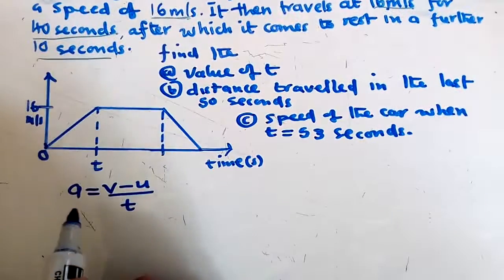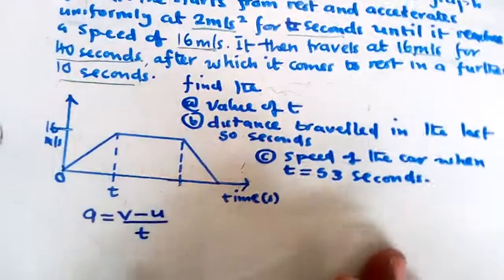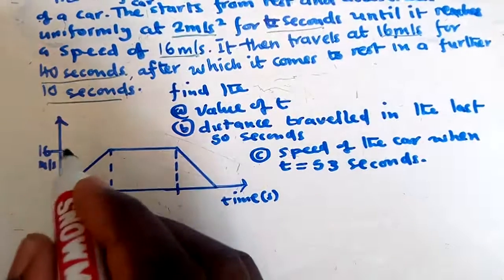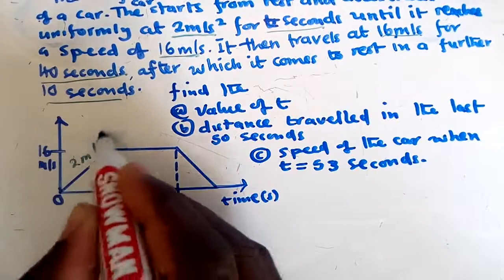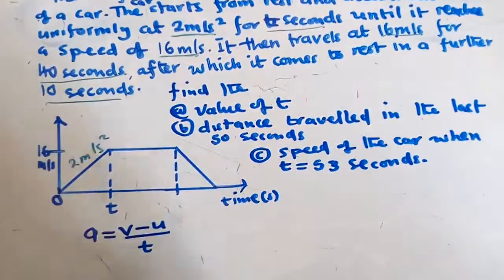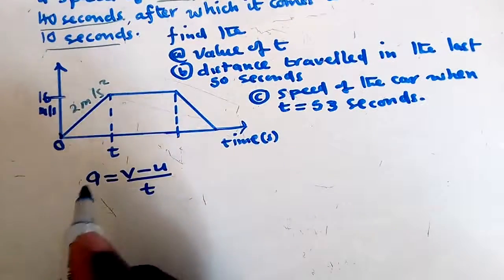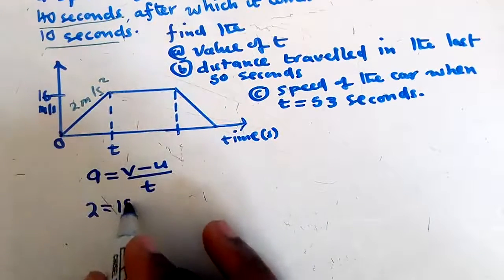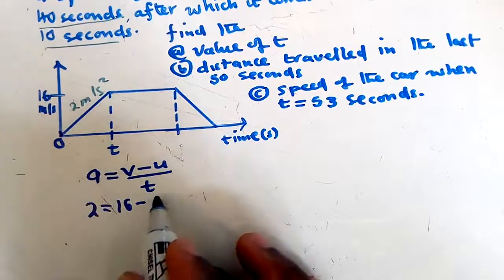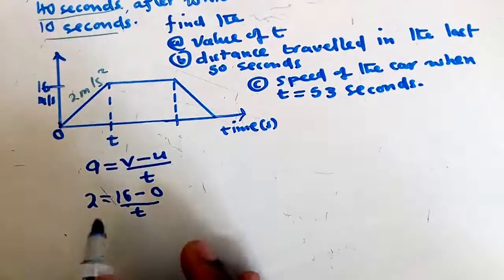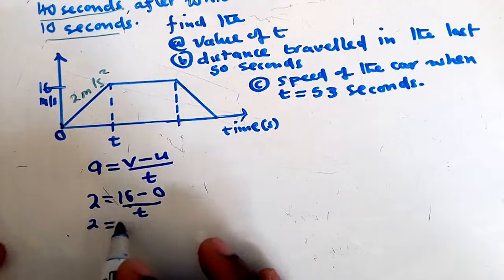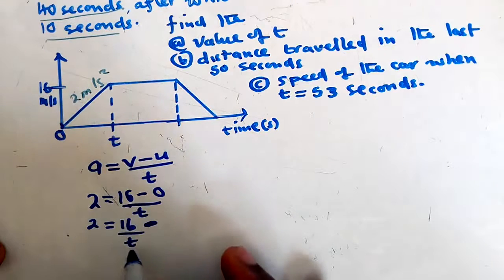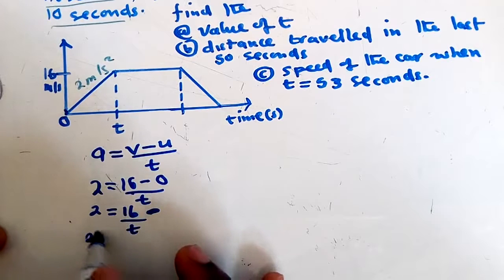We'll use the formula: acceleration equals final velocity minus initial velocity over time. The acceleration is 2 meters per second squared. Final velocity is 16 meters per second and initial velocity is zero. So: 2 = (16 − 0) / t, which gives us 2 = 16/t.